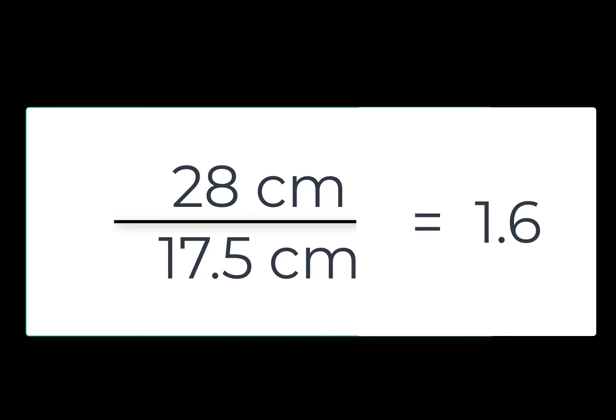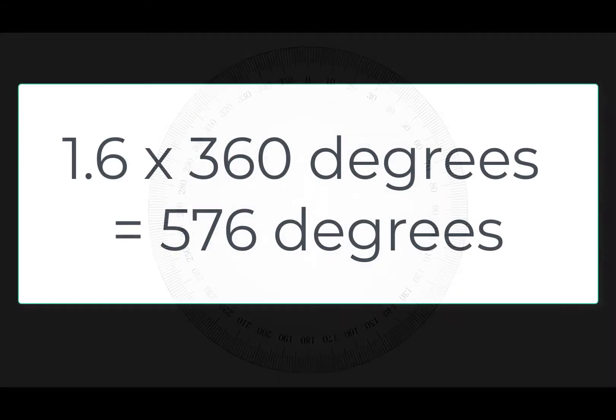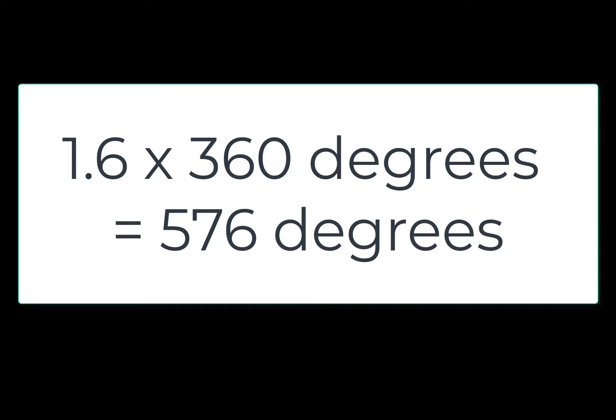How many degrees is that? Each full turn is 360 degrees. So we can multiply by 360 to get the total number of degrees that we want the wheels to turn. 1.6 times 360 degrees is 576 degrees.